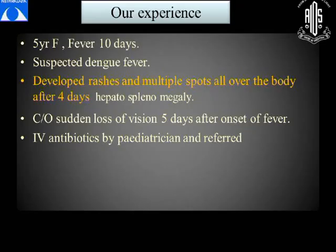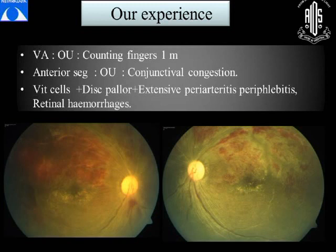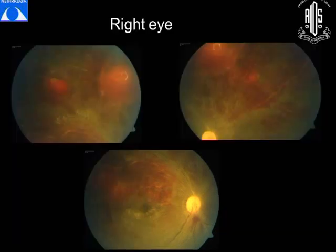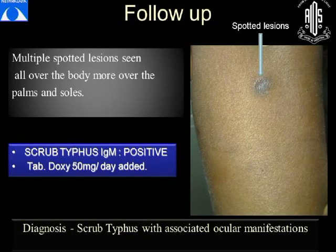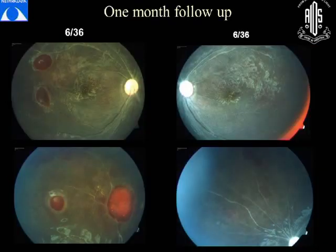We had a 5-year-old child with fever for 10 days, suspected dengue, who developed rashes all over the body and had hepatosplenomegaly. Clinical picture showed counting fingers at 1 meter in both eyes, anterior segment congestion, disc pallor, extensive peri-arteritis, periphlebitis, and retinal hemorrhages, with extensive occlusive vasculitis in both eyes. Most labs were normal. Typical eschar lesions were noted on the skin, and scrub typhus IgM was positive. The patient was put on doxycycline with systemic steroids. Though the disease resolved, vision didn't improve much — around 6/36 — due to sequelae of the occlusive vasculitis.